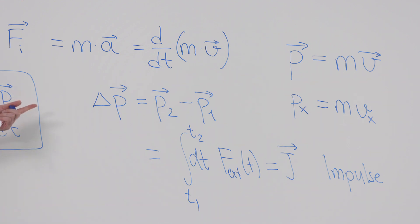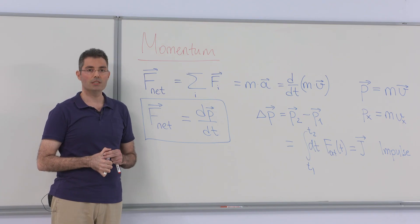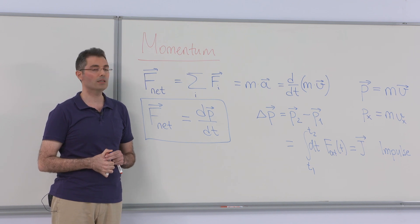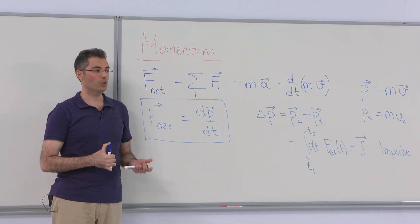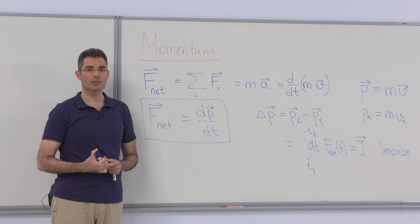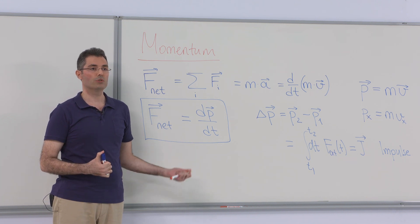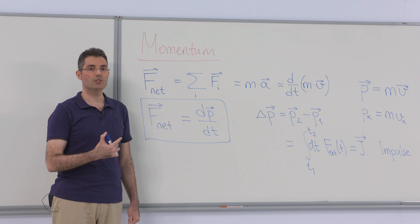Notice that the relation delta p equals J — where J is the impulse — is similar to the kinetic energy work theorem. There, the change in kinetic energy was given in terms of an integral of the force over distance, and the work done was equal to the change in kinetic energy. Here, the integral of the force is over time, and the change is in momentum.